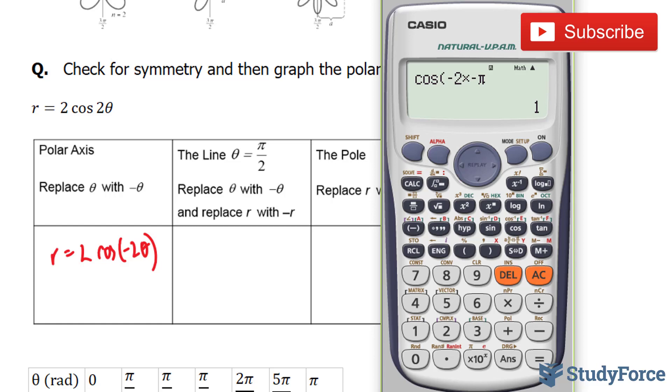So because the right side of the equation doesn't change, this means that this is symmetrical about the polar axis.